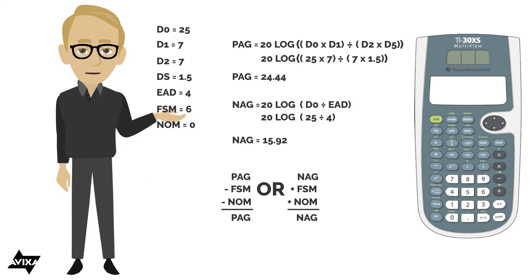Or I can take my NAG and add the FSM and add the NOM to come up with a final NAG. One or the other, do not do it on both sides.